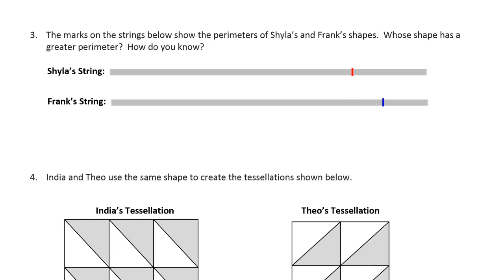The marks on the strings below show the perimeters of Shyla's and Frank's shapes. Whose shape has a greater perimeter? How do you know? Well, it looks like if they're both starting from the same endpoint, Frank's goes longer from the same endpoint. So we have to figure out a way to say this. First of all, we can see Frank's string is longer.